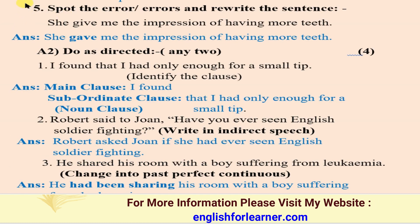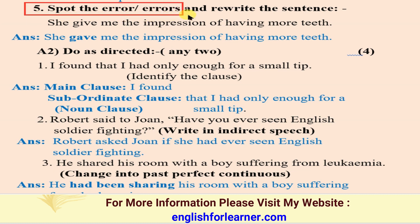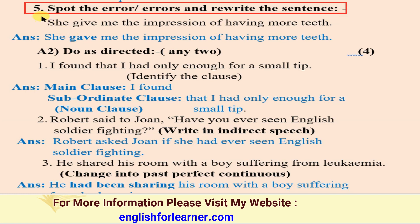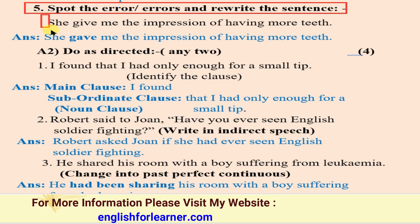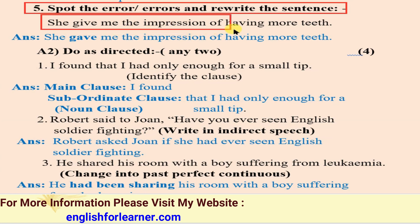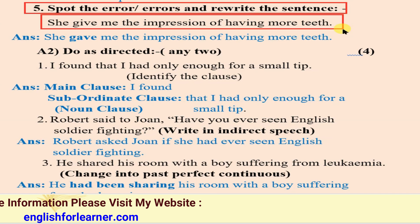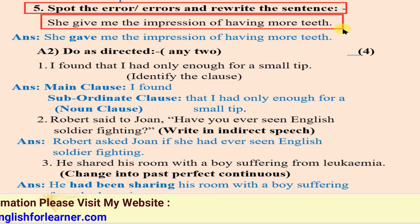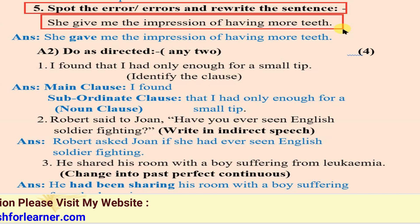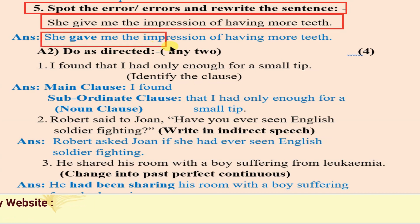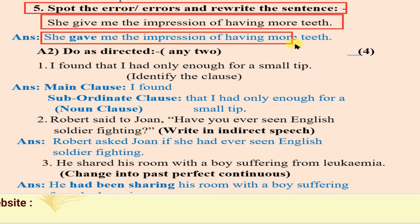Next, activity number five: spot the error and rewrite the sentence. The sentence given is: 'She give me the impression of having more teeth.' You have to find the error and rewrite it by correcting it. The answer is: 'She gave me the impression of having more teeth.' The error was 'give', which is corrected to 'gave'.